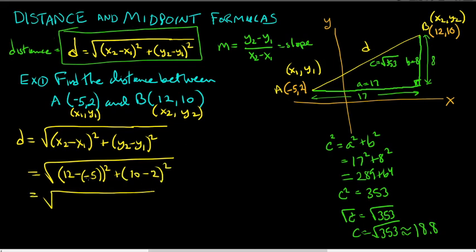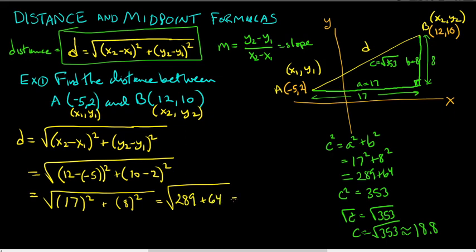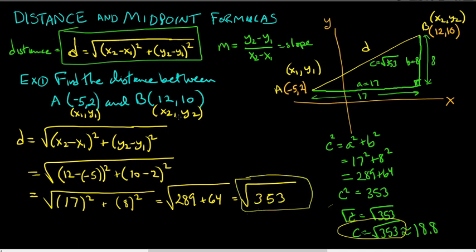12 minus negative 5 is 12 plus 5 is 17. Don't forget we still have to square that, plus 10 minus 2 is 8, and we square that too. 17 times 17 is 289, and 8 times 8 is 64. Add 289 plus 64 — that's the 353 we got before. Same answer. This time we just used the distance formula.